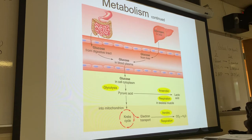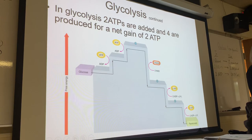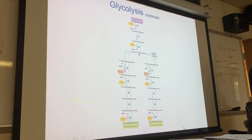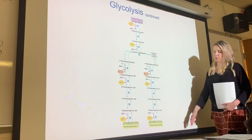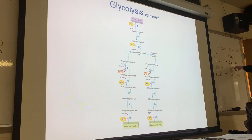Cell cytoplasm, right. So remember, when we absorb glucose from the digestive tract into the capillaries, the glucose travels to the cells and will be transported into the cell. As soon as that glucose gets into the cell cytoplasm, it's trapped by the phosphate from ATP. So that's where it occurs — glycolysis occurs in the cell cytoplasm.